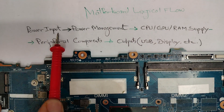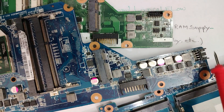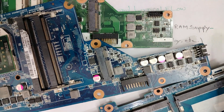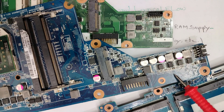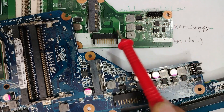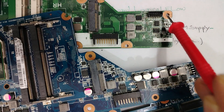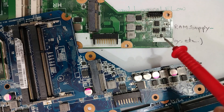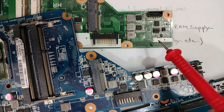The first step is power inputs. For this motherboard, here is the DC jack connector — this is the power input area. We also have the DC jack connector near the battery connection. This is the power input area where we have B-plus: 19V, 18V, 15V, or 12V, depending on the type of motherboard.